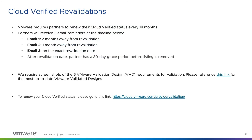VMware requires that partners revalidate their Cloud Verified status every 18 months to ensure that customers are getting the benefits of the latest versions of the VMware Cloud Platform technologies delivered as a service by our partners. You will receive an email at 60 days out from revalidation, 30 days out, then on the exact revalidation date. You will have a grace period of 30 days from your revalidation date before VMware delists your profile on our website. To renew your Cloud Verified status, please go to the link listed at the bottom of this page.